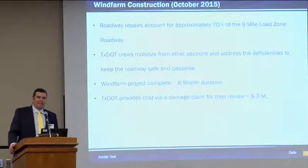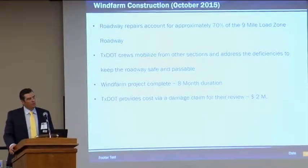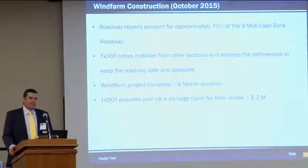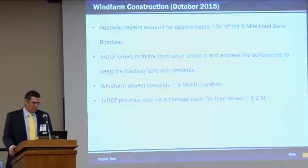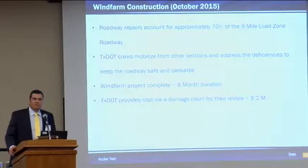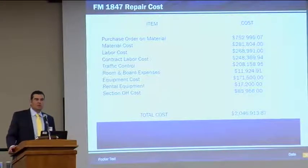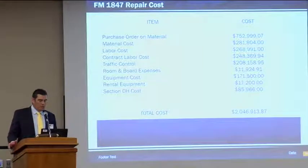All in all, the road repairs accounted for about 70% of the nine-mile load-zone roadway. We mobilized various crews from all over the district, because in a maintenance section you can't really dedicate 100% of your resources to just one roadway — there are other needs out there as well. It was an eight-month duration and the total bill was about $2 million. The beauty of our Compass maintenance management system is that it captures all that cost. The material alone was about a million dollars of limestone, which was relatively cheap in our area. Taking into account traffic control, equipment, and lodging, the burn rate was about $2 million.